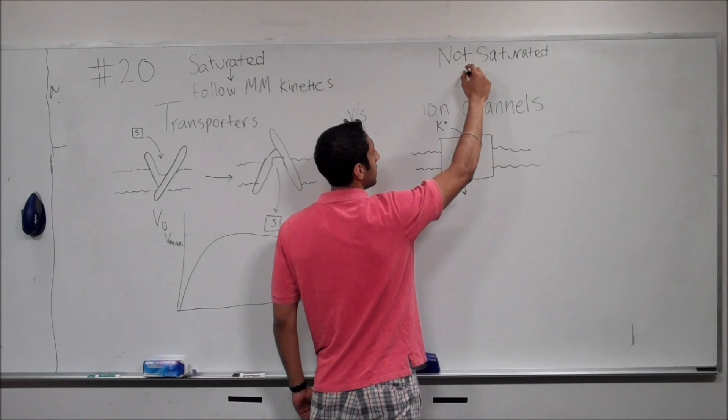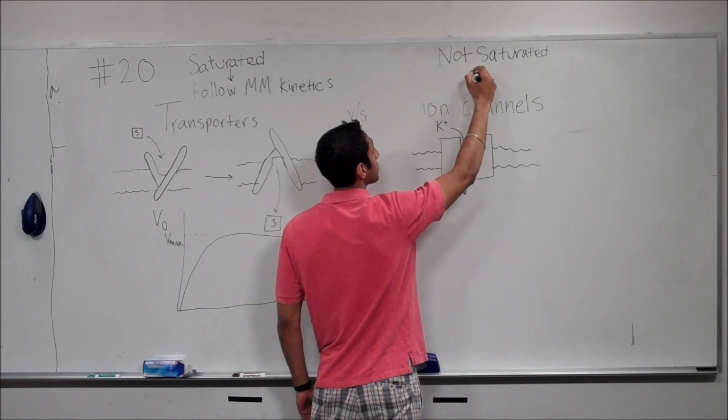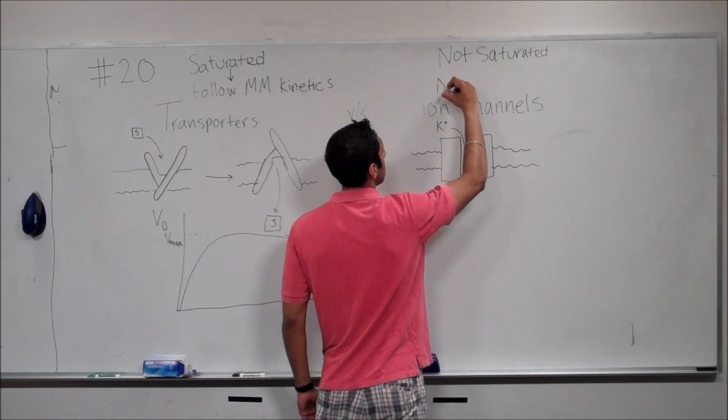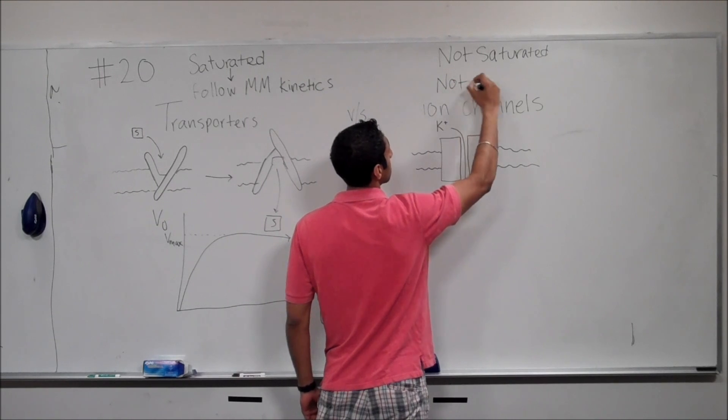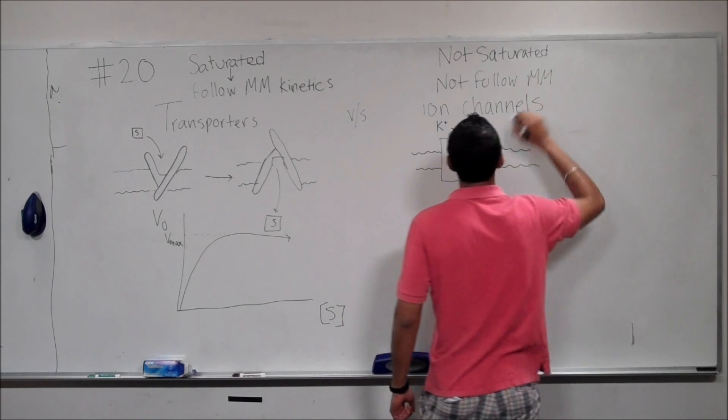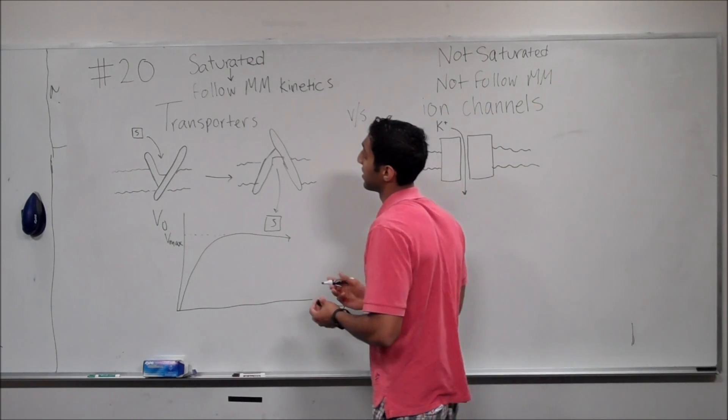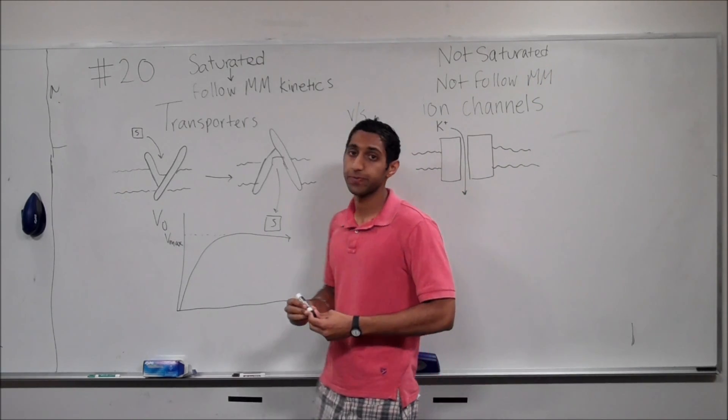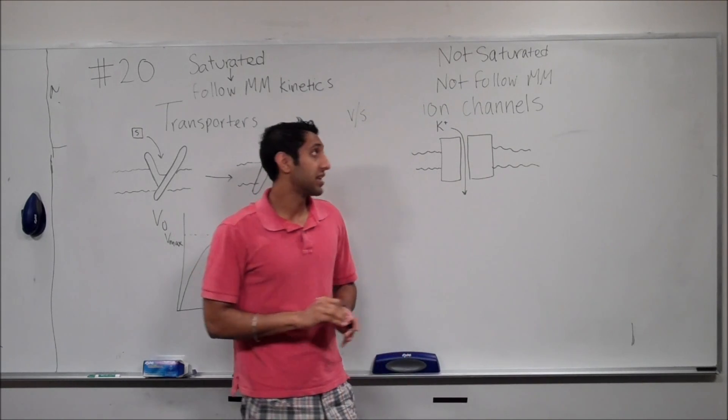So, in the levels of concentration that cells work with, they do not follow Michaelis-Menten kinetics. At least not in the same way as transporters do. So, again, guys, remember, the differences between transporters and ion channels is simply that ion channels do not necessarily get saturated.